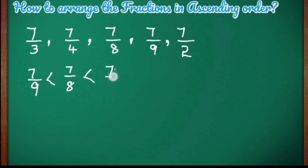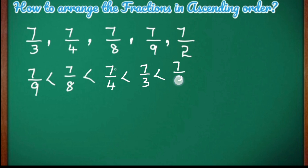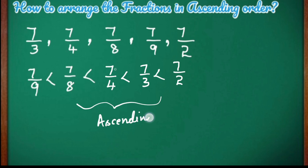So 7 by 9 is smaller than 7 by 8, then comes 7 by 4, then 7 by 3, and lastly 7 by 2. This is how we can write the fractions in ascending order if the numerators are same — the fraction with the greatest denominator is the smallest fraction.